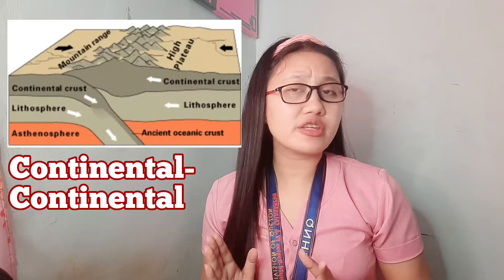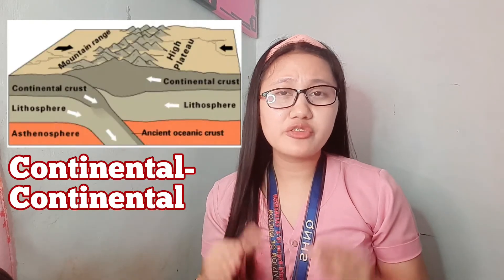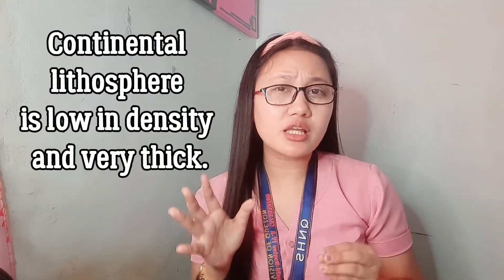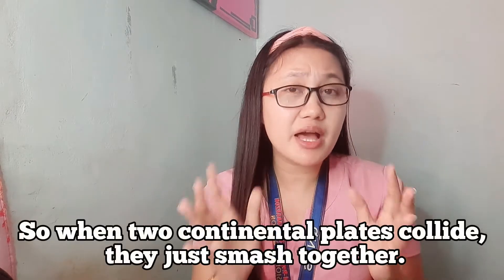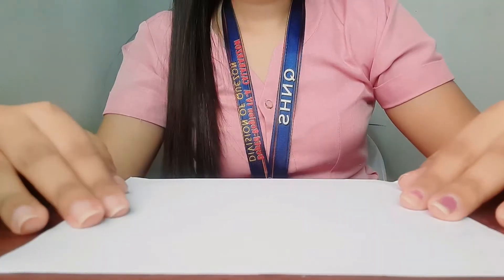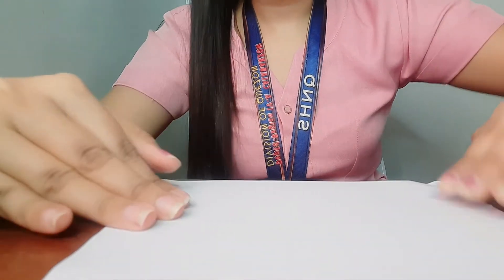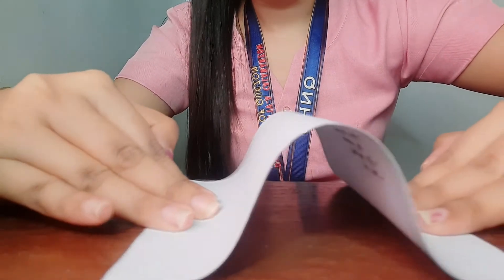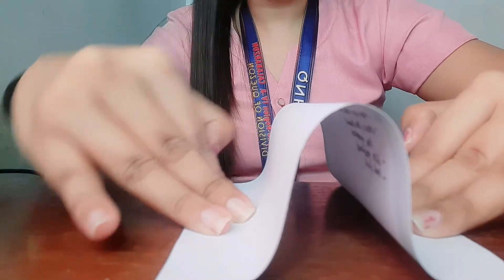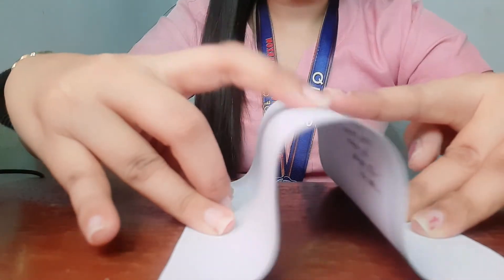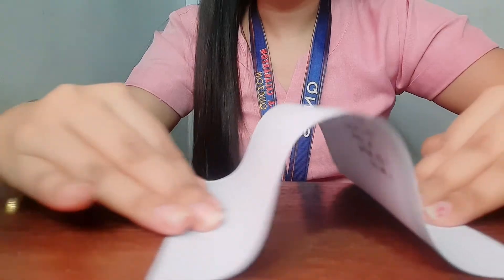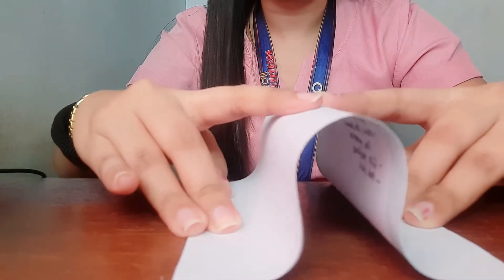In a continental-continental convergent plate boundary, two continental plates collide. Continental lithosphere is low in density and very thick, so it cannot subduct. When two continental plates collide, they just smash together — like placing your hands on two sides of a sheet of paper and bringing them together; the material has nowhere to go but up. New earthquakes and metamorphic rocks result from the tremendous forces of the collision.